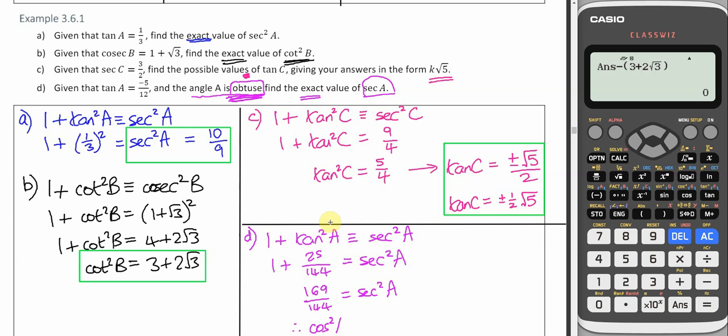So if I do the reciprocal of both sides, and it doesn't matter that I've switched sides as well. It's just the order that I'm writing them in. I get cos squared A is 144 over 169. Now when I square root both sides, I get cos A.